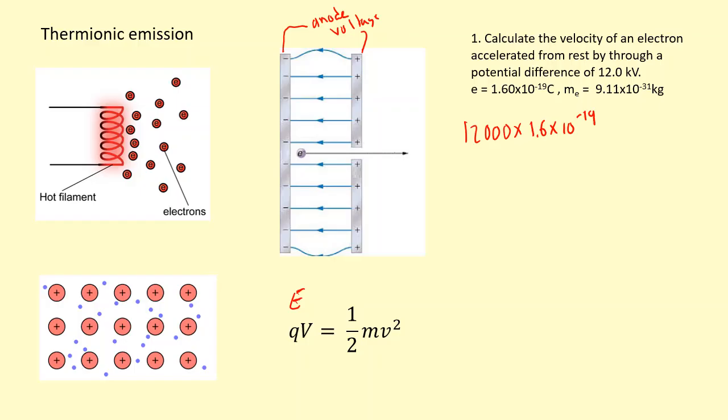So that's the voltage times the charge which gives us the energy transfer from the field, and that's equal to the kinetic energy—half times the mass of the electron times v squared. If you rearrange and find v, you should get 6.49 times 10 to the 7 meters per second. This electron passes through that gap.